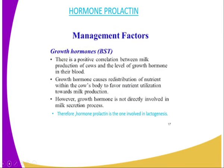To start with, I'm going to start with hormone prolactin. Hormone prolactin is the hormone which is involved during the process of milk production. When the milk is being processed in the mammary gland, that is the hormone which comes in. It determines the manner in which the milk is being processed.